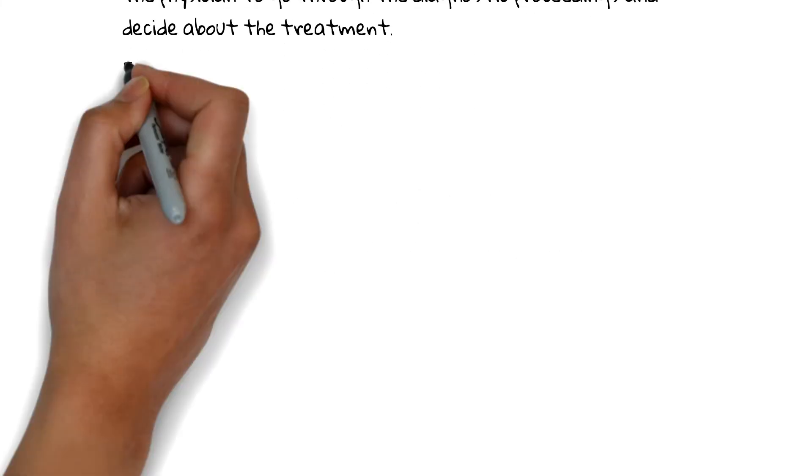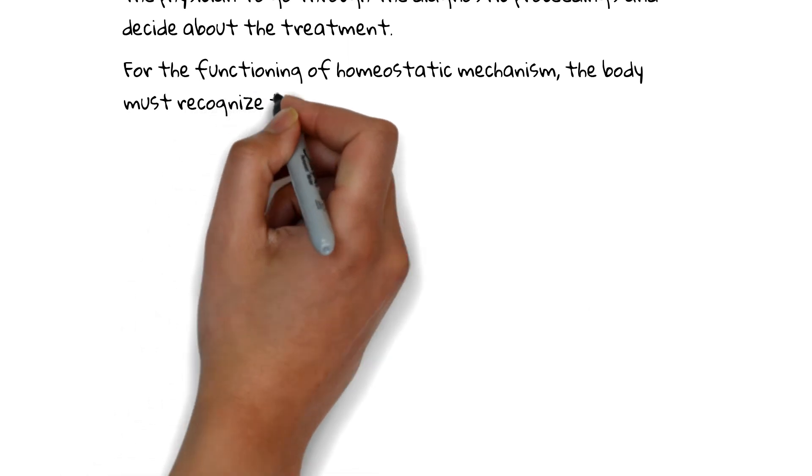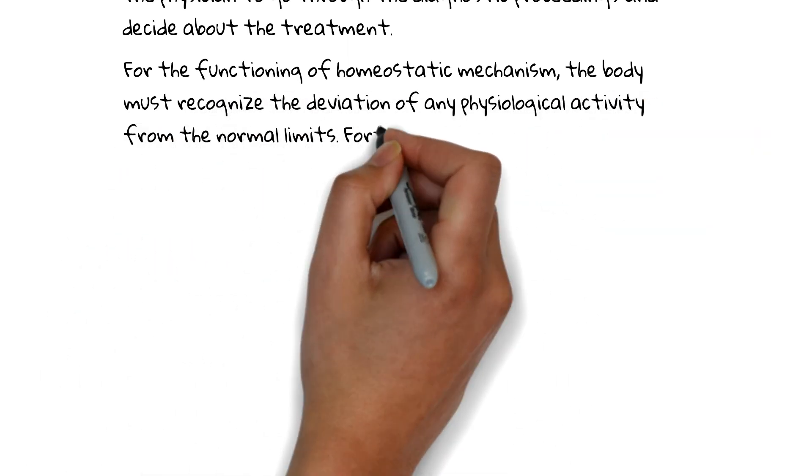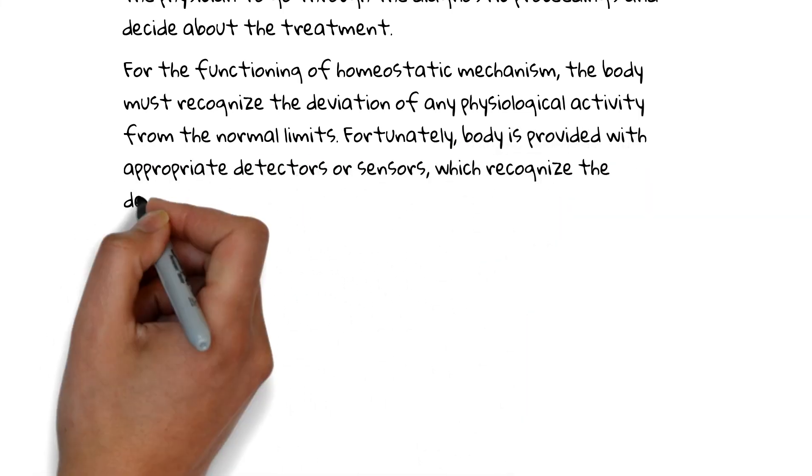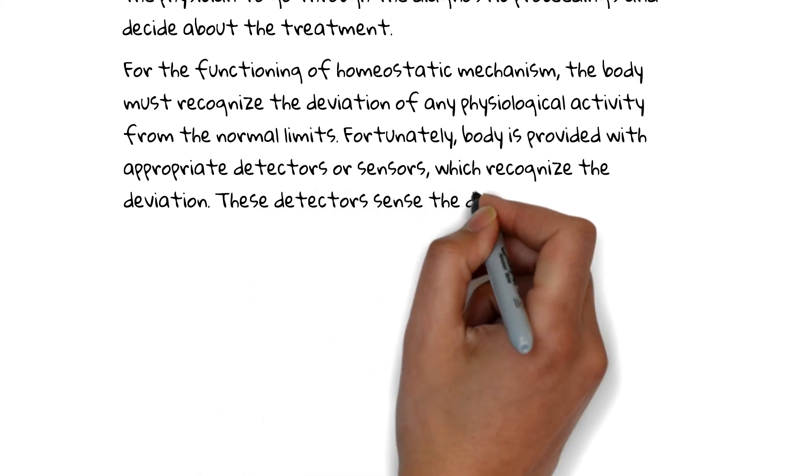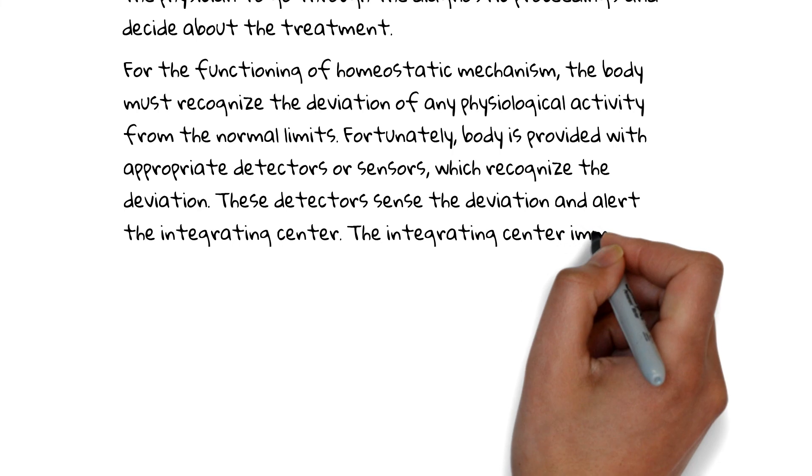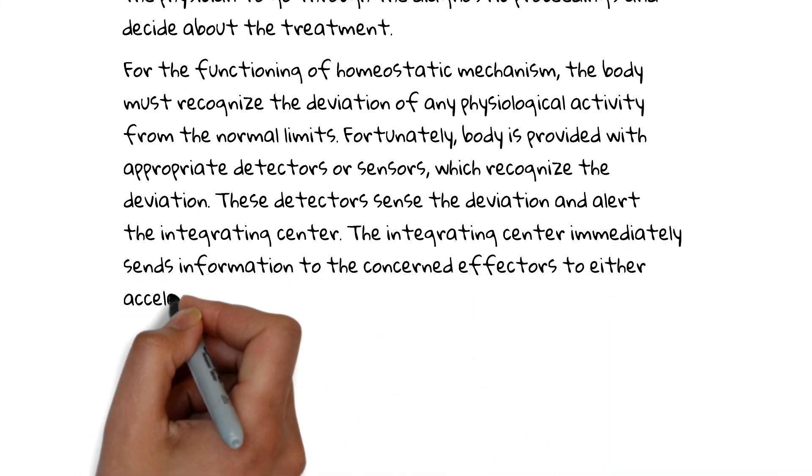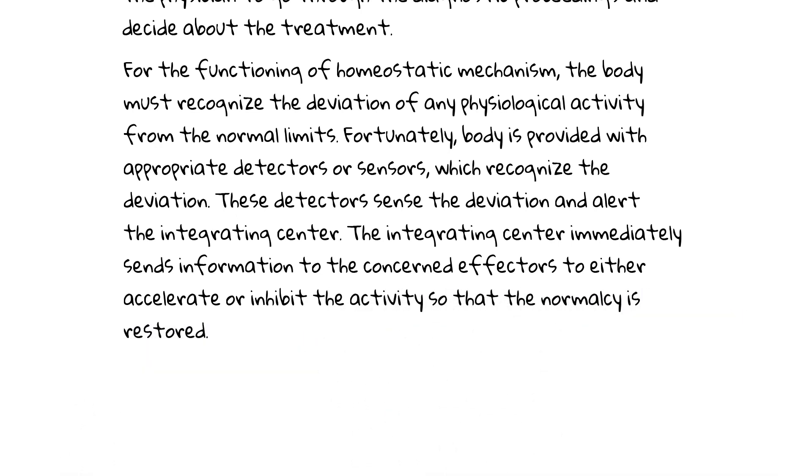For the functioning of homeostatic mechanism, the body must recognize the deviation of any physiological activity from the normal limits. Fortunately, body is provided with appropriate detectors or sensors which recognize the deviation. These detectors sense the deviation and alert the integrating center. The integrating center immediately sends information to the concerned effectors to either accelerate or inhibit the activity so that the normalcy is restored.